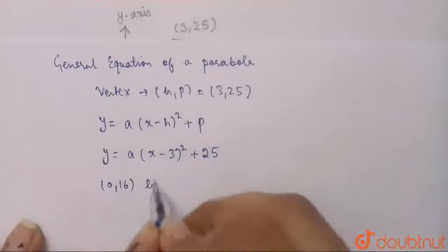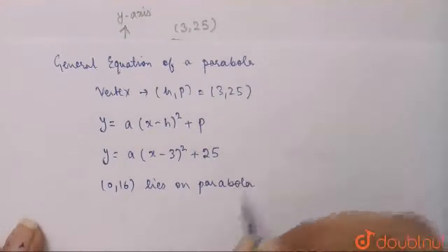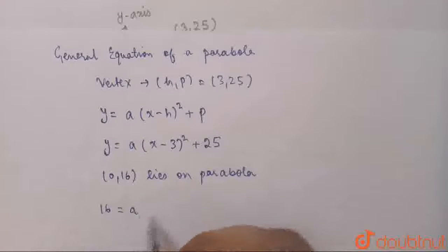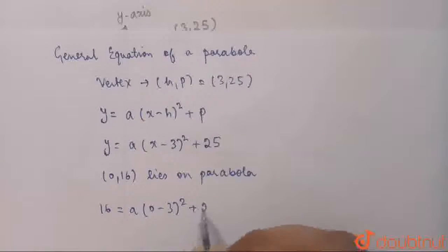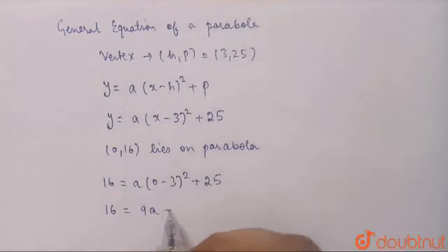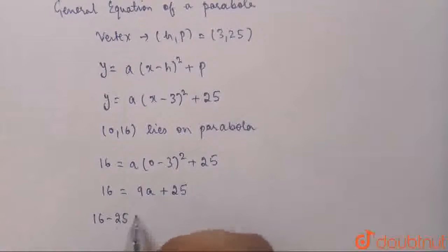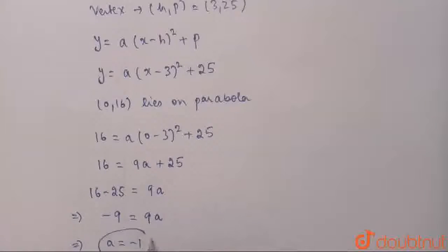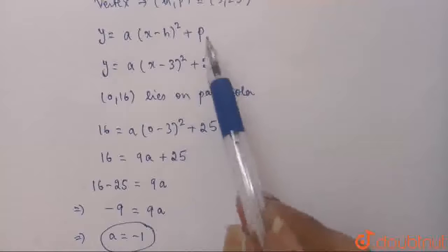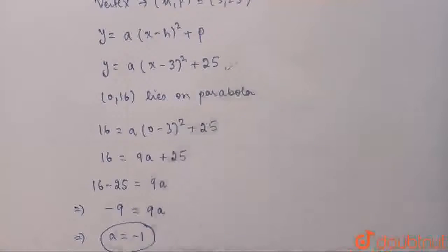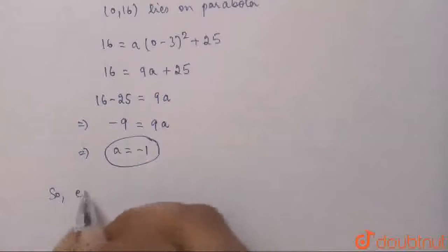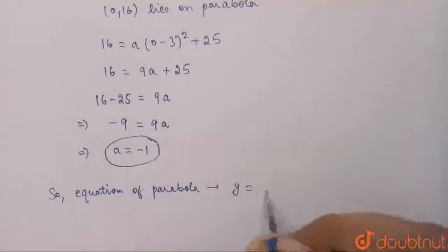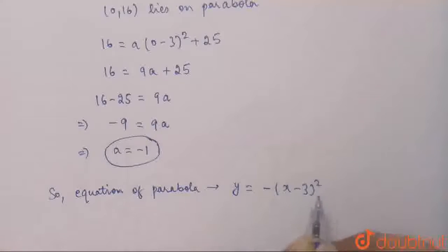Putting the value of x = 0 and y = 16, we get 16 = a(0 - 3)² + 25, so 16 = 9a + 25. Therefore 16 - 25 = 9a, which means -9 = 9a and a = -1. So the value of a is -1. Putting the value of a in the equation, the equation of the parabola becomes y = -(x - 3)² + 25.